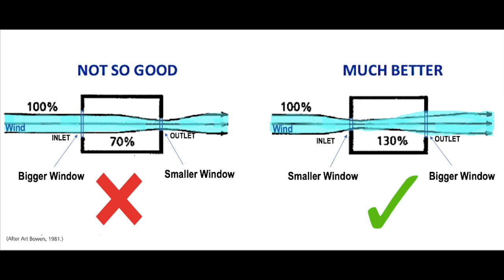While designing a building, place these windows in such a way that the inlet and outlet windows should be of the same size. If they cannot be of the same size, make sure the inlet window on the prevailing wind direction is smaller than the outlet window to maximize the velocity of air movement inside the building.